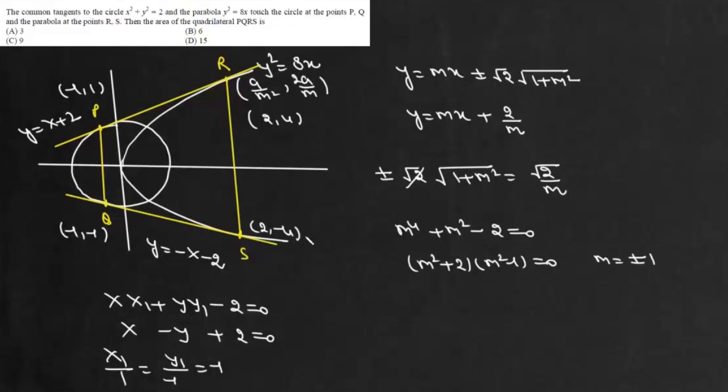Now we have to find area of this trapezium. Now area of this trapezium, it is given by 1 by 2 sum of parallel sides. Now this is 2 and this is 8. So there will be 10 into this perpendicular and this perpendicular is 3. This area is 15 square units. So the correct option is this option D.